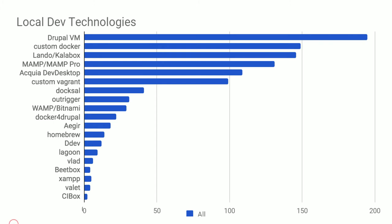The capitalized items were on our provided list; the others were written-in answers. Tools like Vlad, Valet, and Lagoon were write-ins. We had Ager, Homebrew, Outrigger, and Doxol — Doxol was a fury on Twitter when we forgot to include it. Also Dev Desktop, Lando, Calbox, and Drupal VM. This is the money slide: the top six are Custom Vagrant, Custom Docker, Dev Desktop, MAMP, Drupal VM, and Lando/Calbox. Those are solidly the top tier of solutions. Then there's a middle group and a long tail of outliers.